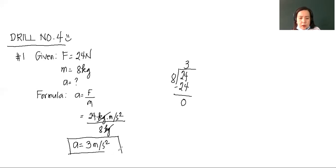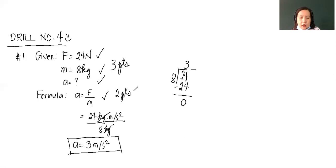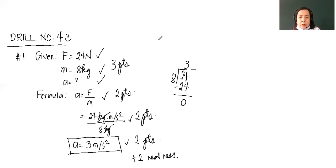Do not forget to enclose your answer in a box. For our points: three points for the given, two points for the formula, two points for the substitution, two points for the final answer, and plus two for neatness, for a total of eleven points for number one. Now let us proceed to number two.